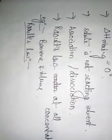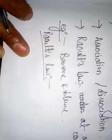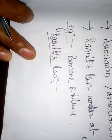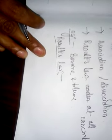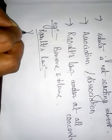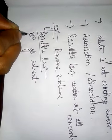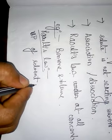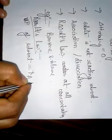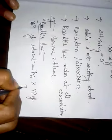Raoult's Law for binary solutions states: the partial pressure of any volatile constituent of a solution at constant temperature equals the vapor pressure of the pure constituent multiplied by the mole fraction of that constituent in the solution. So, the vapor pressure of the solvent — or partial pressure of the solvent — equals the mole fraction of the solvent times the vapor pressure of the pure solvent.